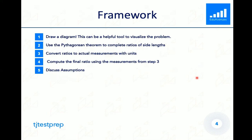Alright, so first we can start by creating a framework. Our first step would be to draw a diagram. And this can help us visualize the problem. And then we can use the Pythagorean theorem to complete ratios of side lengths. And then we can convert these ratios to actual measurements with units. And then our fourth step would be to compute the final ratio using the measurements that we got from step 3. And then finally, we can discuss assumptions. And these are basically contextual elements that affect our final answer.